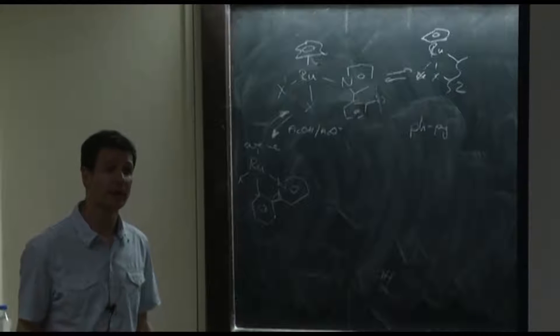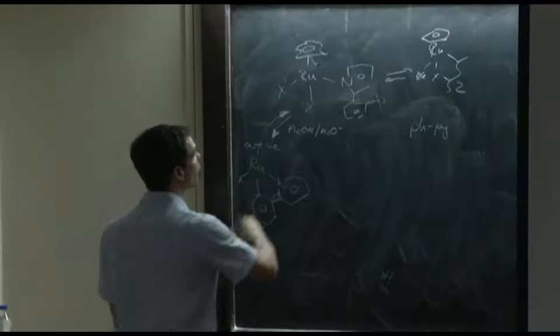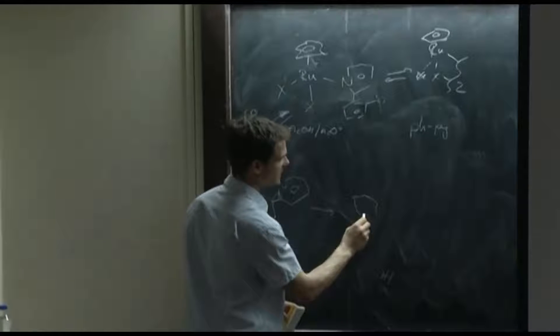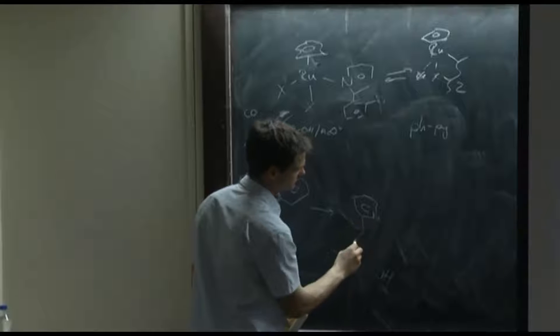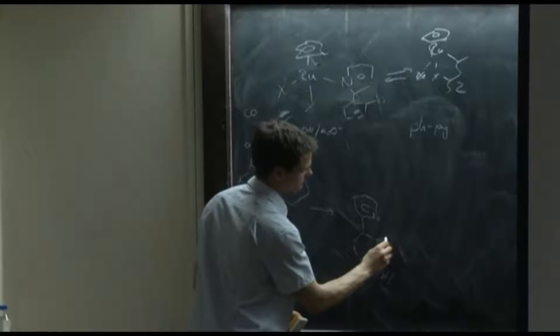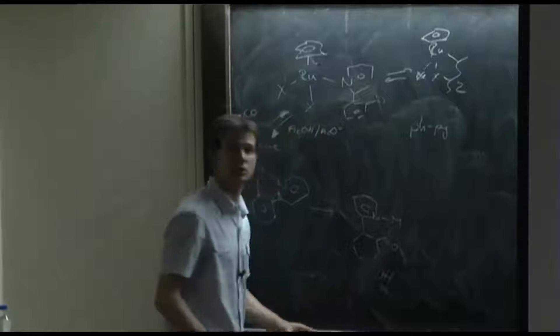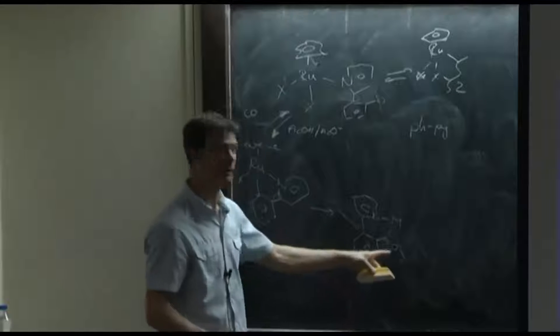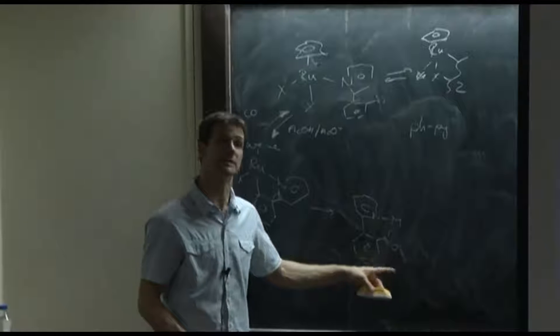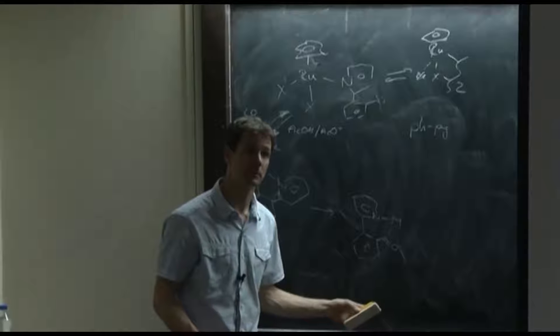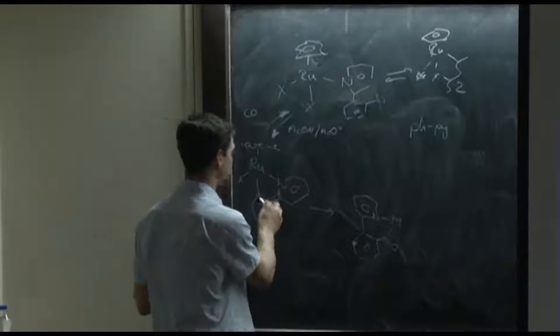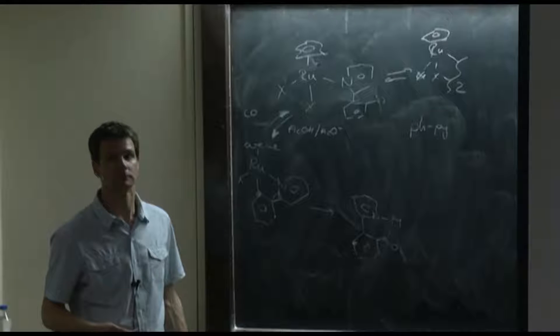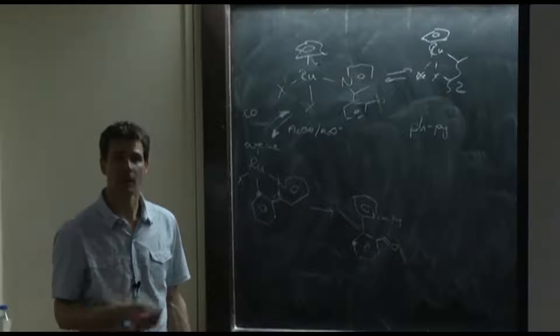This is different when we do a carbonylation. So when we add to the whole thing here CO pressure, then what we form in the cyclometallated state is then, which then gets protonated and cleaved off. But now we change the electronics of the ring. Now we deplete electron density so the second cyclometallation will be hampered, will be much slower, because that position is much less activated than this position. We have removed electron density.